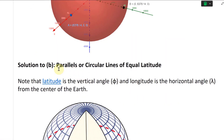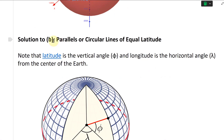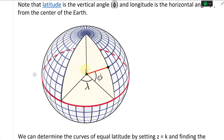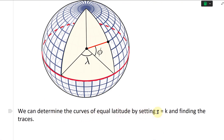Solution to part B. Part B asks: curves of equal latitude are traces in the planes z equals k — what is the shape of these curves? Latitude is the vertical angle and longitude is the horizontal angle from the center of the Earth. If we cut at equal latitude, setting z equals k, we get circles. Lines of equal latitude form horizontal circles, and meridians of equal longitude form vertical ellipses.